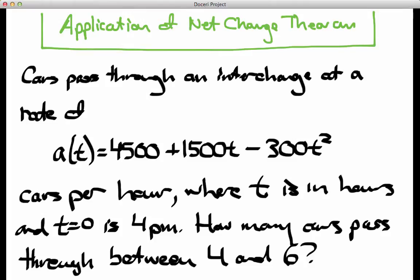So here's the problem. We have cars passing through a very busy interchange, and the rate at which those cars pass through is given by this function a(t), which is 4,500 plus 1,500t minus 300t². That a(t) is measured in cars per hour, and t is measured in hours in such a way that t equals 0 corresponds to 4 o'clock in the afternoon. And the question is, how many cars pass through this interchange between 4 p.m. and 6 p.m.?